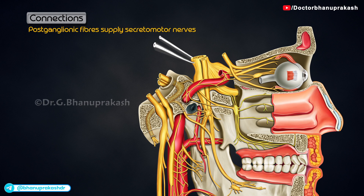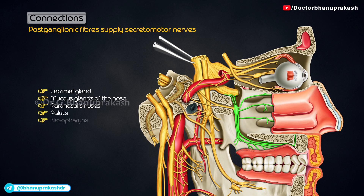Postganglionic fibers arise in the ganglion to supply the secretomotor nerves to the lacrimal gland and to the mucous glands of the nose, the paranasal sinuses, the palate and the nasopharynx.